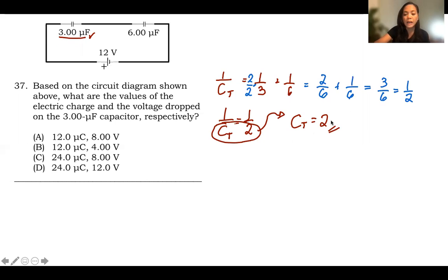Now, once you get the total capacitance of 2 microfarads, let's solve for the total charge. The total charge has this formula: the total charge is equal to the total capacitance times the total voltage.